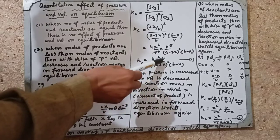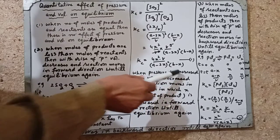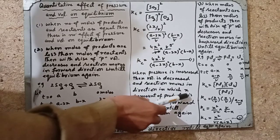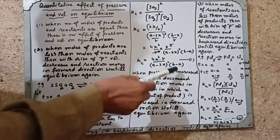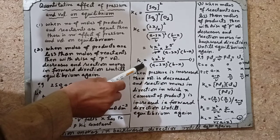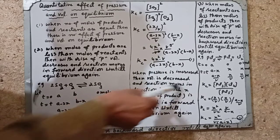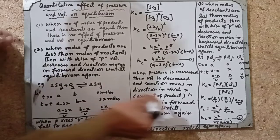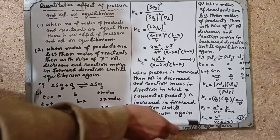یہ equation آئے گی: Kc = 4X² × V / [(A−2X)² × (B−X)]۔ When pressure is increased then volume is decreased۔ X یہاں amount of product ہے۔ Kc کی value change نہیں ہونی، تو جب volume کم ہوگا تو X کو بڑھانا پڑے گا۔ So reaction moves in the forward direction, and X is increased until equilibrium is reached again.